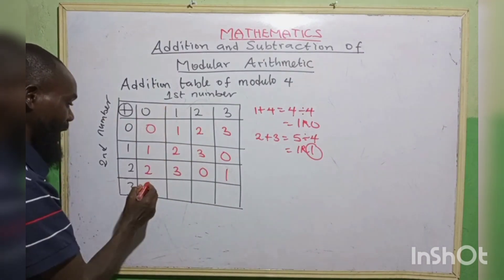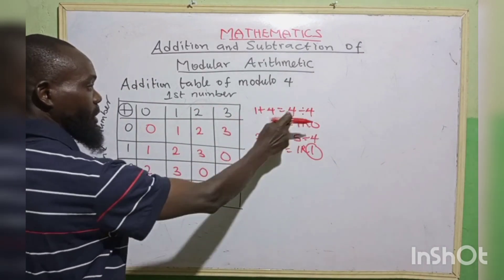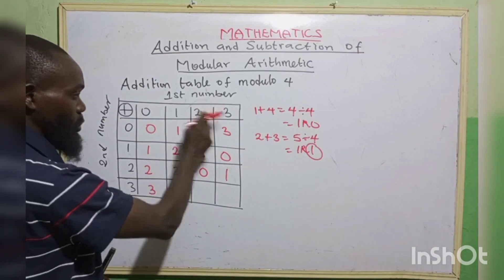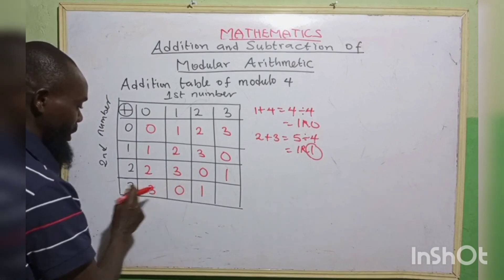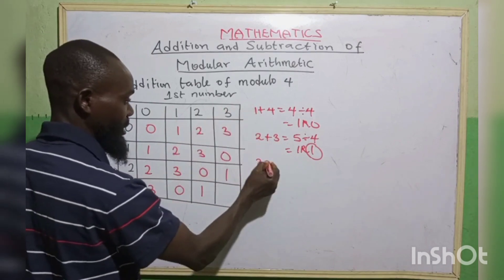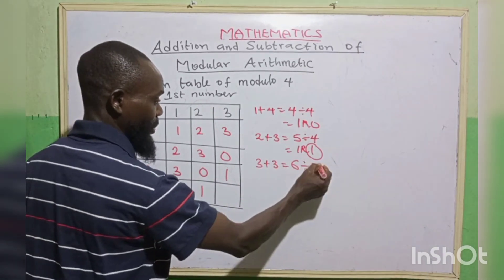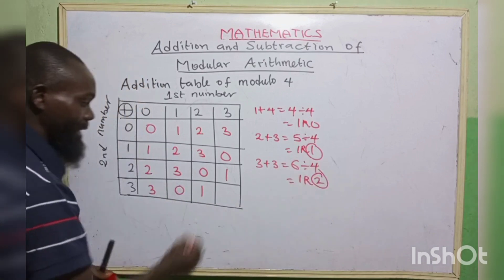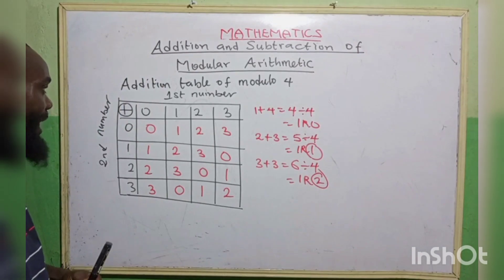For the row starting with 3: 3 plus 0 is 3. 3 plus 1 is 4 — 4 goes into 4 once, remainder 0, so we write 0. 3 plus 2 is 5 — 4 goes into 5 once, remainder 1, so we write 1. 3 plus 3 is 6, which is above the modulo. 6 divided by 4 is 1 remainder 2, so we write 2. This is how to perform the addition operation of modulo 4.